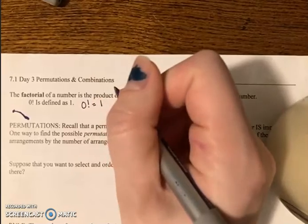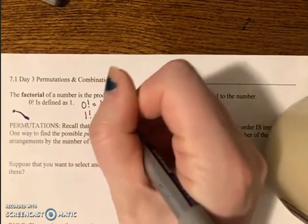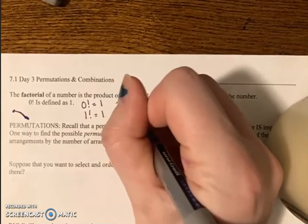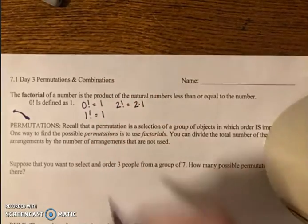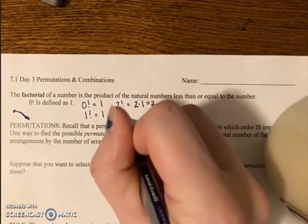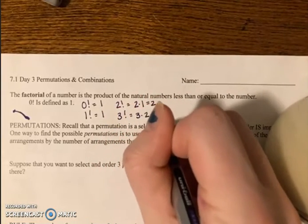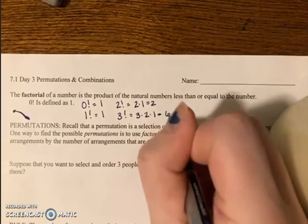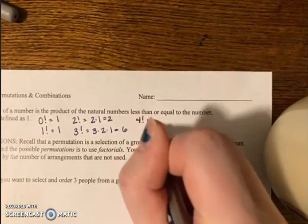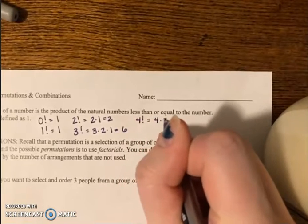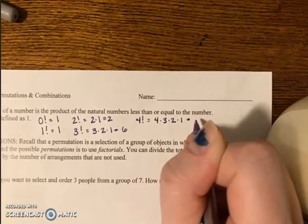0 factorial we define as 1. 1 factorial will be 1. 2 factorial will be 2 times 1, which is 2. 3 factorial will be 3 times 2 times 1, which is 6. 4 factorial is 4 times 3 times 2 times 1, which is 24.